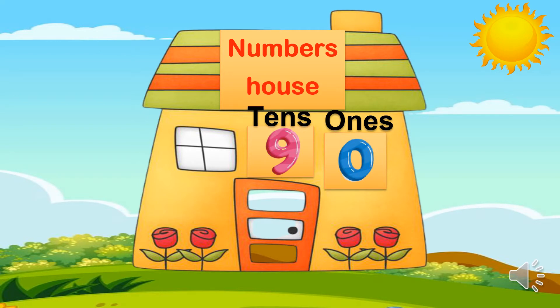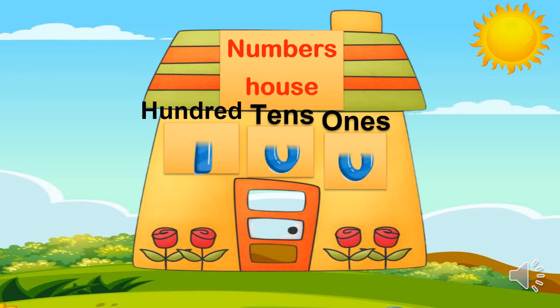Now, what's the number after ninety? One hundred. I ask myself: how many digits are in one hundred? Three digits. So it needs three rooms — ones room, tens room, hundreds room. Look here: the first zero lives in the ones room, the second zero lives in the tens room, and number one lives in the hundreds room.